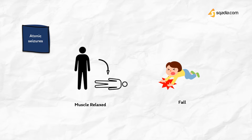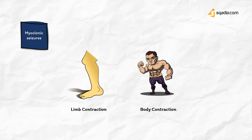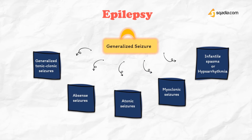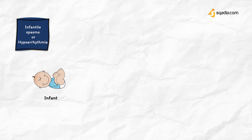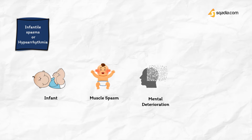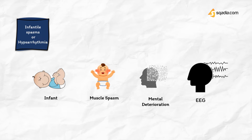Atonic seizures include unconsciousness with relaxation of all muscles due to excessive inhibitory discharges, and the patient may fall. Myoclonic seizures have shock-like momentary contraction of muscles of a limb or the whole body. Infantile spasms or hypsarrhythmia are seen in infants, probably not a form of epilepsy, with intermittent muscle spasm and progressive mental deterioration. Diffuse changes in the interictal EEG are noted.